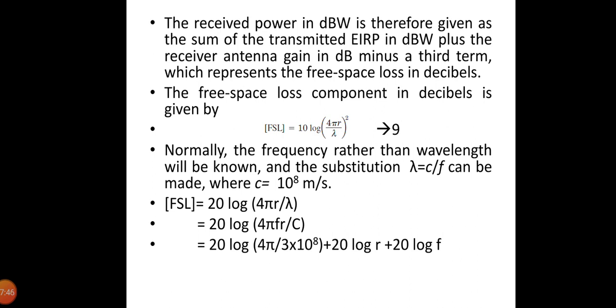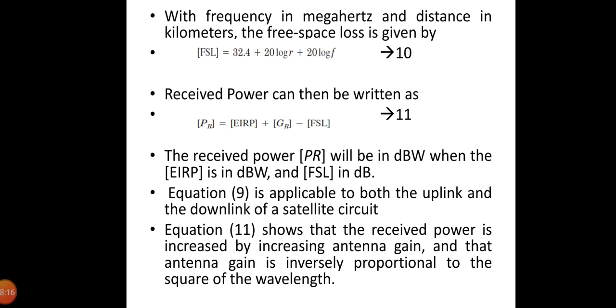This is obtained by taking that two value to the front. You can write FSL as 20 log(4πr/λ) and substitute λ equals c/f. That becomes 20 log(4πrf/c). Substituting the value of the constant c equals 3×10⁸ meters per second, that equation can be written as 20 log(4π/(3×10⁸)) plus 20 log r plus 20 log f. Substituting the values and calculating, the free space loss can be written as 32.4 plus 20 log r plus 20 log f.